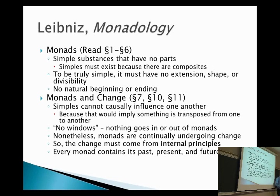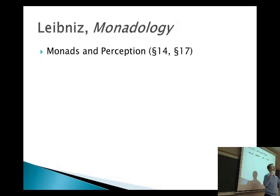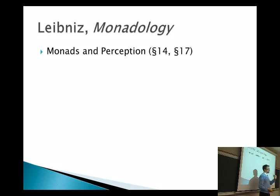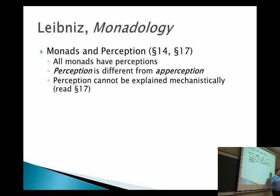So, how is it that we then perceive the world? There are no windows in or out of a monad. He says that every monad has perception to it. Every single monad — including those that make up my water bottle, this clicker, and the table — he is seriously saying that all of these things have perceptions.